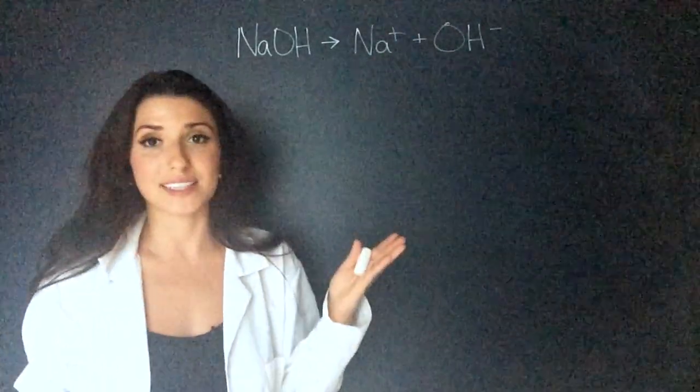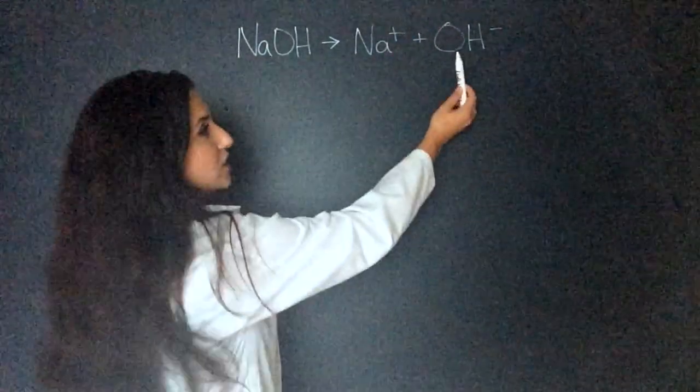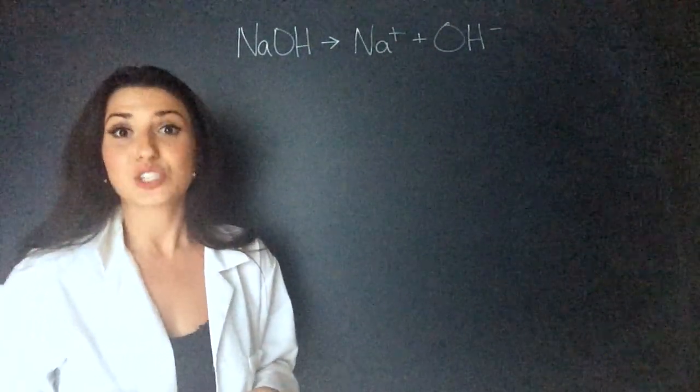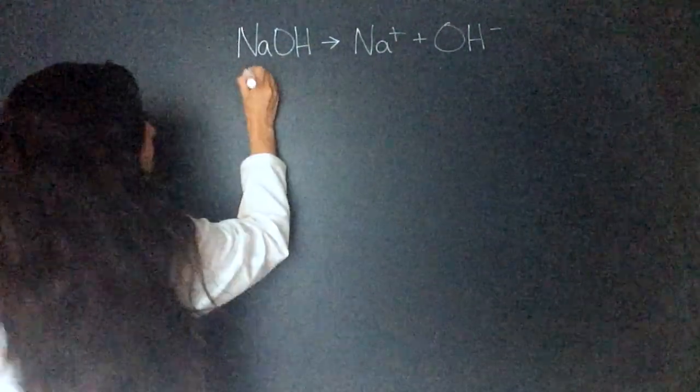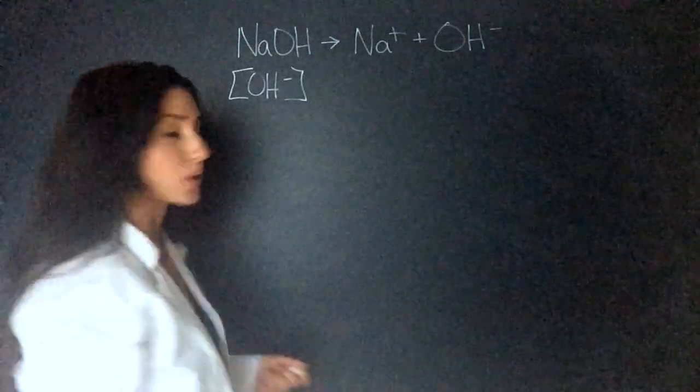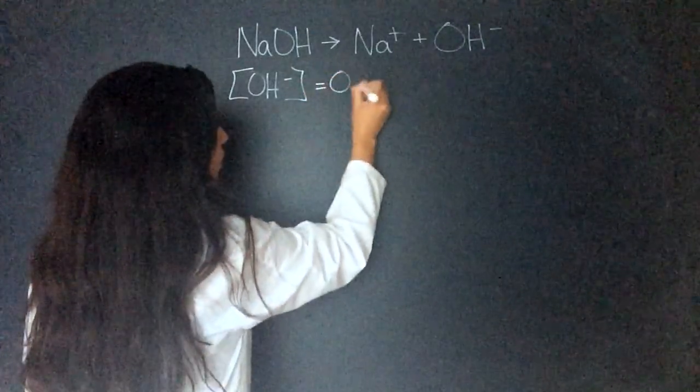So let's start with writing out the equation. We have sodium hydroxide becoming the sodium ion and the hydroxide anion. Now this is balanced. And we know now that the hydroxide is in a one-to-one ratio with the base. So then we know that the concentration of OH is the same as what they said in the question, which is 0.96.